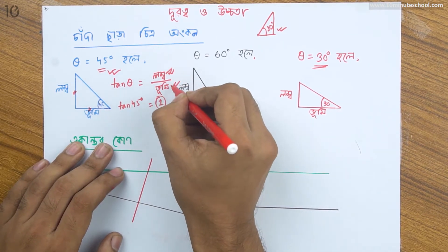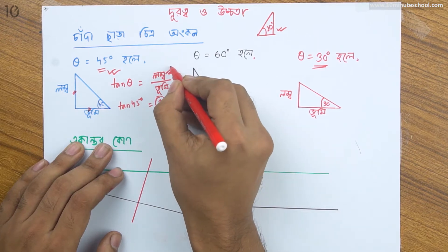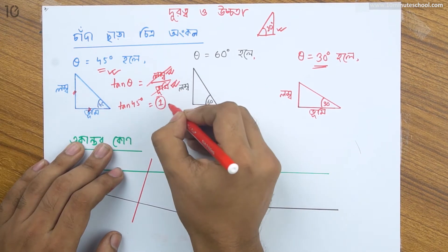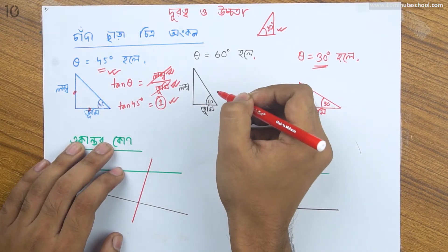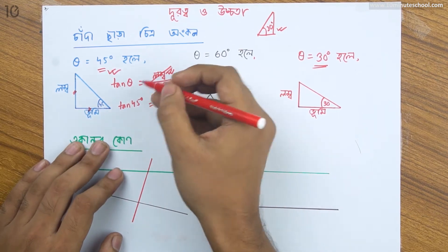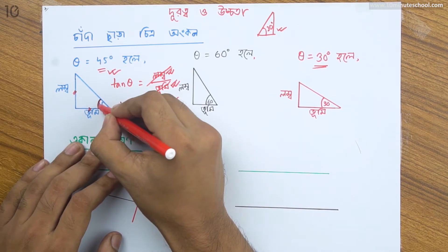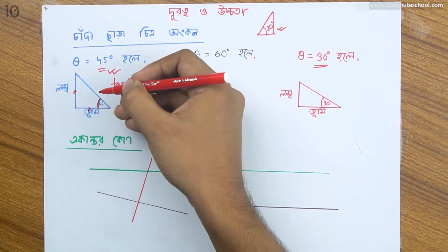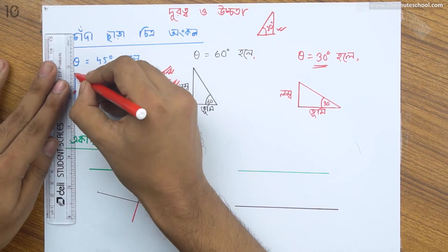Because the height is one, the height is 2. The height is 1. But the height is 45 degrees, which means the height is 1.